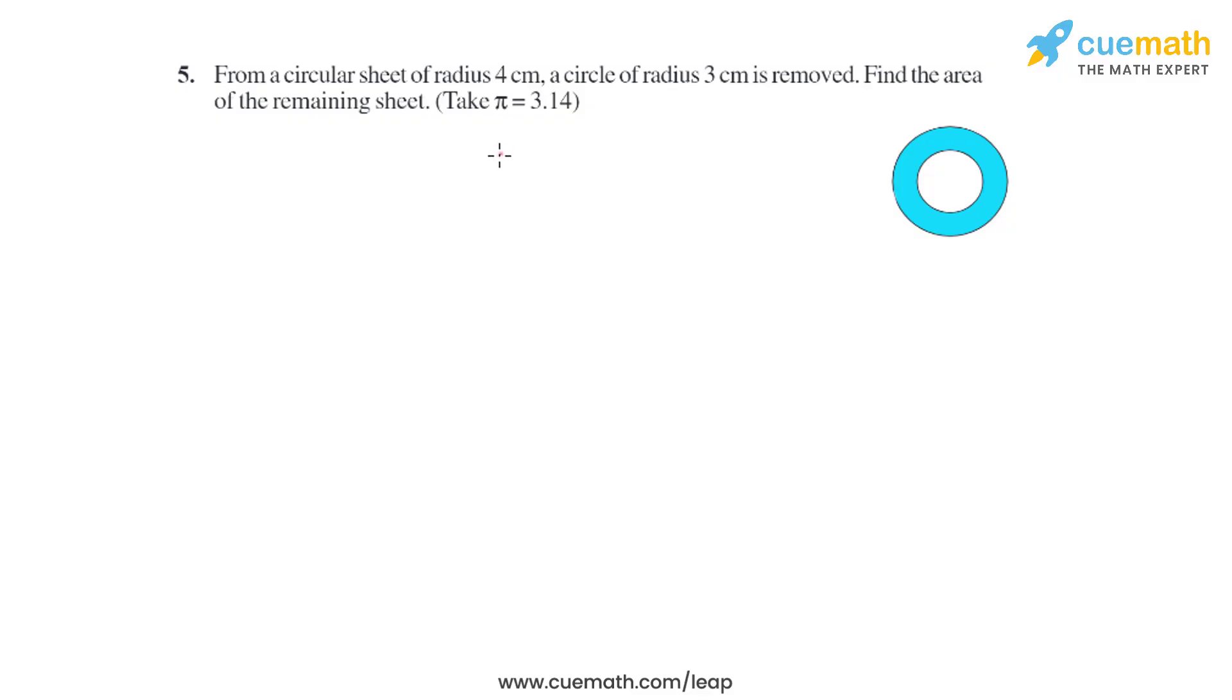Question 5 of this exercise says: From a circular sheet of radius 4 cm, a circle of radius 3 cm is removed. Find the area of the remaining sheet. Take π = 3.14. Let's find the area of the circular sheet of radius 4 cm. Let's take it as A₁ = πr₁².